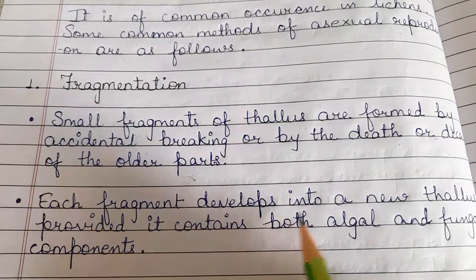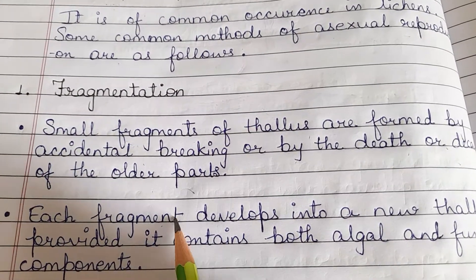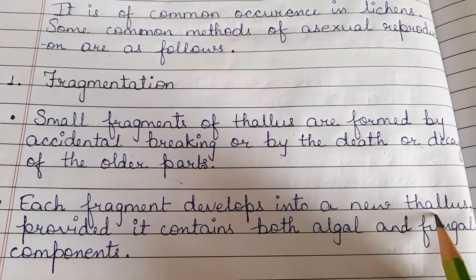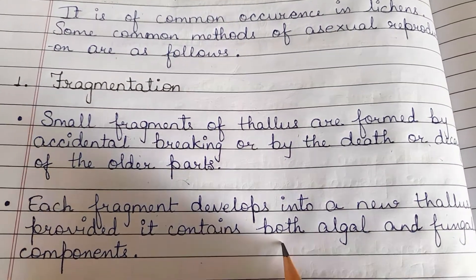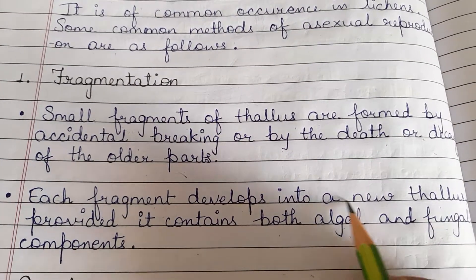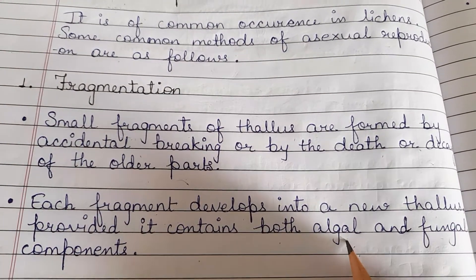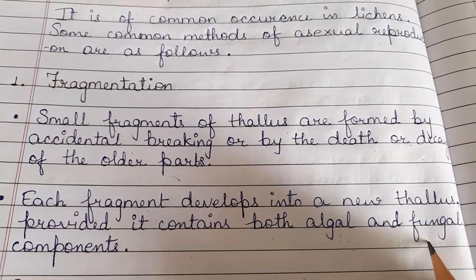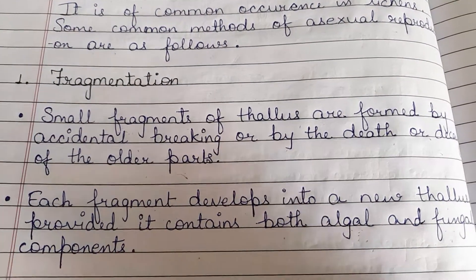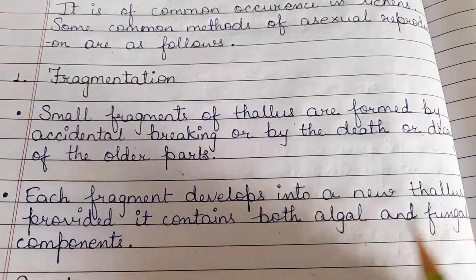Each fragment develops into a new thallus, provided it contains both algal and fungal components. This is the condition: both algal and fungal parts must be present in the fragment. If only one component is present, the fragment will not develop into a new thallus.